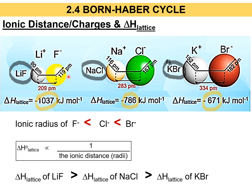Set aside the negative sign for now. We can compare the ionic radii: the ionic radius of F⁻ is the smallest — smaller than Cl⁻ and Br⁻. Since the relationship between enthalpy of lattice and ionic radii is inversely proportional, LiF has the greatest lattice energy among the three. The deciding factor here is ionic distance, since all their charges are equal to 1 (positive one for the cation, negative one for the anion).